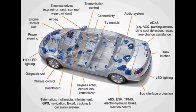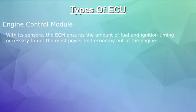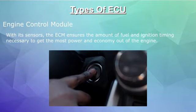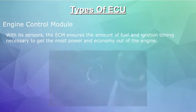Types of ECU. With vehicles having multiple ECUs, they are divided on what tasks they perform. Some of these types are as follows. Engine control module: with its sensors, the ECM ensures the amount of fuel and ignition timing necessary to get the most power and economy out of the engine.